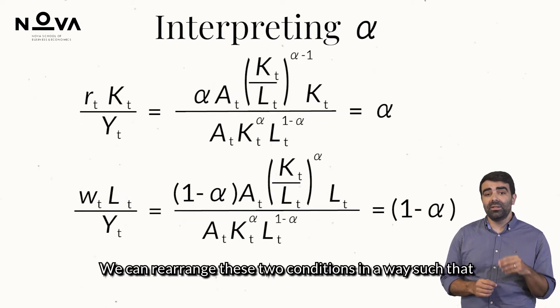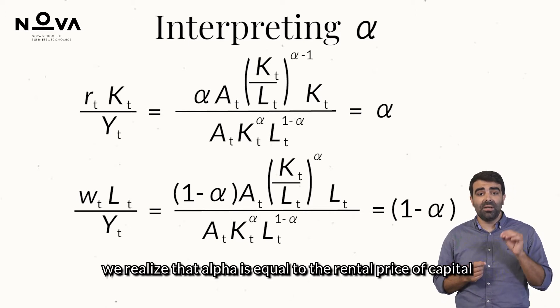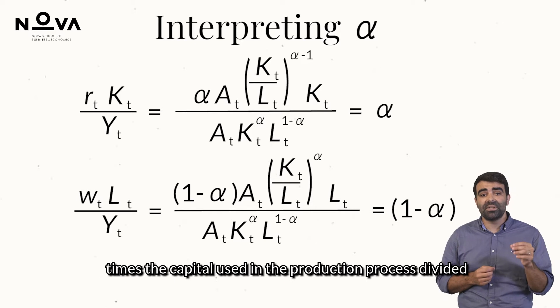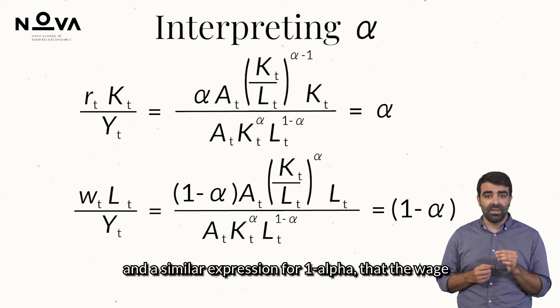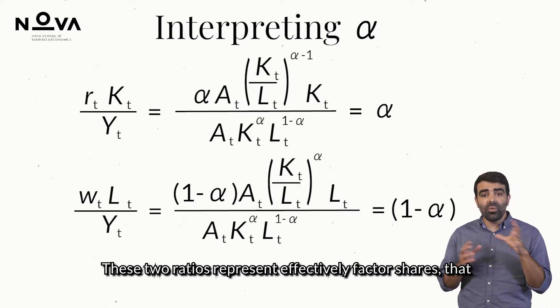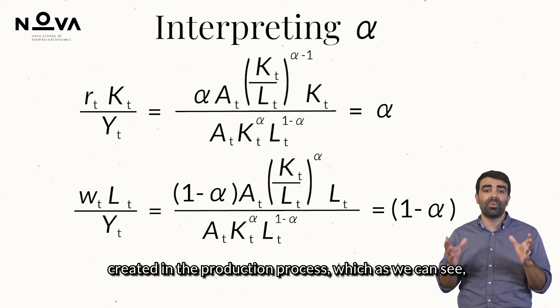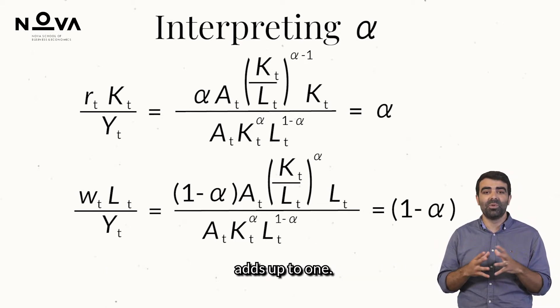We can rearrange these two conditions in a way such that we realize that α is equal to the rental price of capital times the capital used in the production process divided by output. And a similar expression for 1 minus α that the wage rate times the amount of labour units used divided by output. These two ratios represent effectively factor shares, that is, total payments to each factor as a share of total wealth created in the production process, which as we can see, add up to 1.